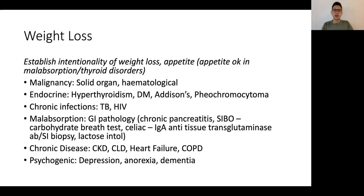If the appetite is not preserved, then we're looking at more systemic disorders such as malignancies, chronic infections like TB and HIV, and systemic disorders that are chronic such as chronic kidney disease, chronic liver disease, heart failure, and so on. It's also important not to forget psychogenic causes like depression, dementia, and anorexia as well.